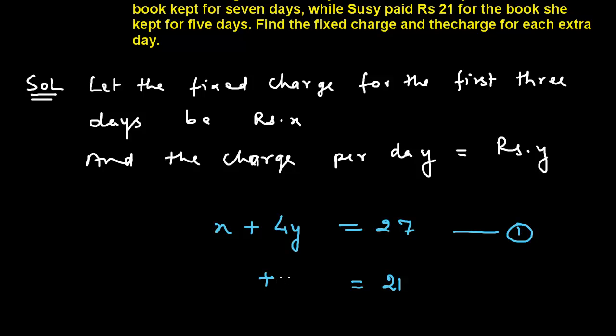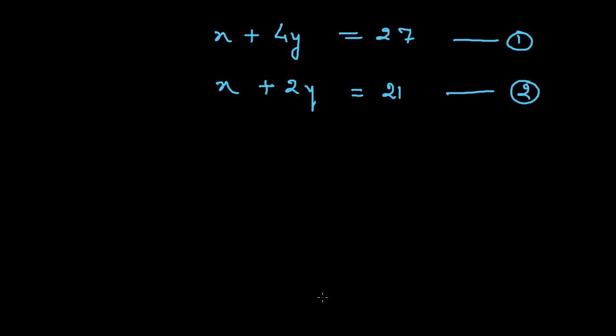This means X plus 2Y, two days because X is the charge for first three days, here we remain with two days. This is our equation number two. Now we shall apply the elimination method to solve this pair of equations for X and Y.